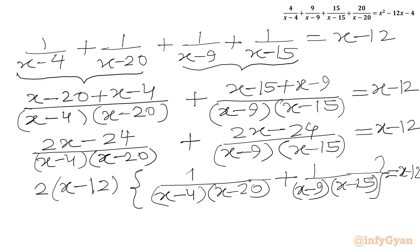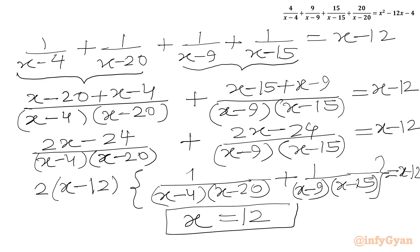Now if I plug in X equal to 12, it will satisfy our equation. So our second real solution is X equal to 12. We can remove (X−12) from both sides, so RHS becomes 1 now.